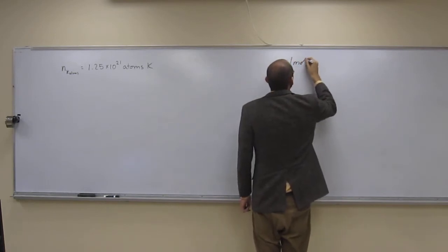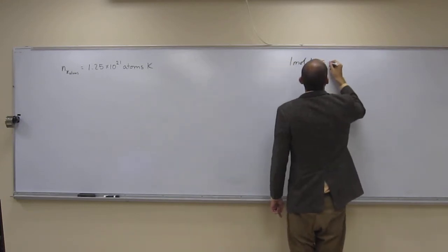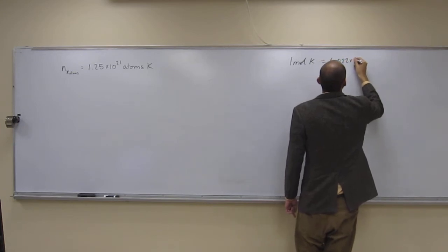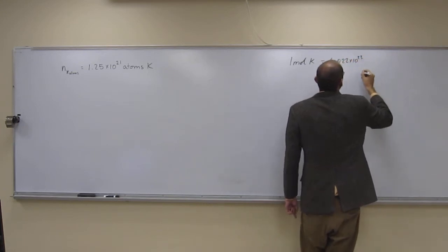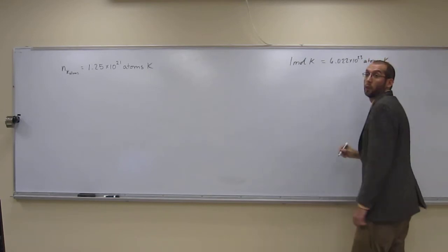So it's one mole, in this case, of potassium equals 6.022 times 10 to the 23rd atoms of potassium, like that.